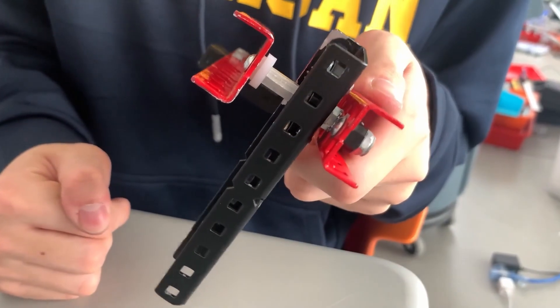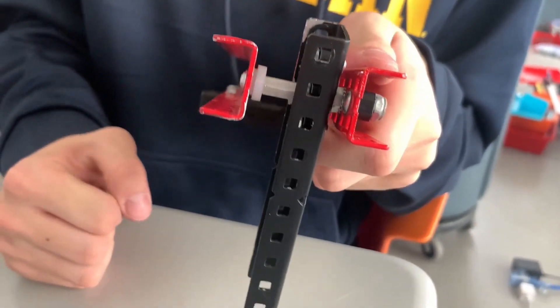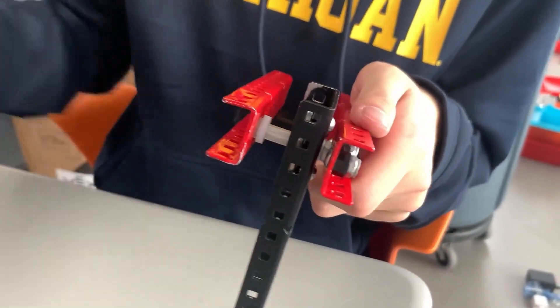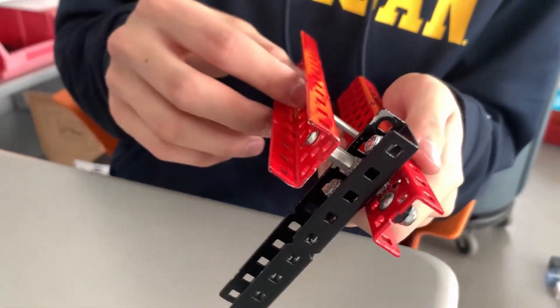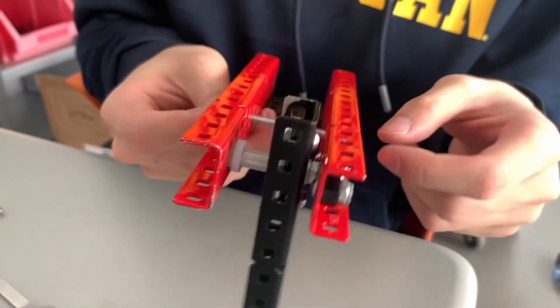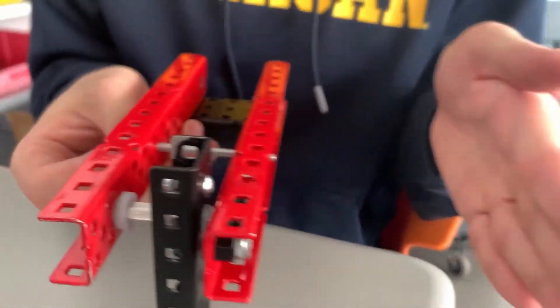The advantage of this design is that for the previous two designs, your screw has to be physically long enough to pass through both C-channels. However, this is not always the case. For example, if you have two C-channels that may be placed over here, then you can't really use the first two methods.